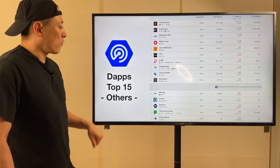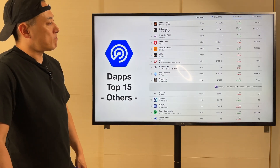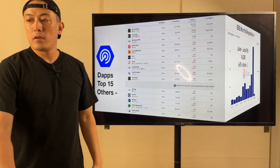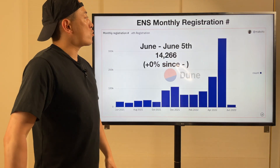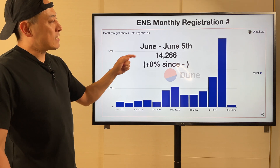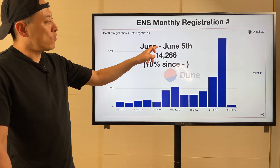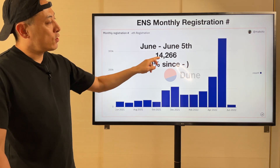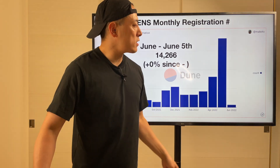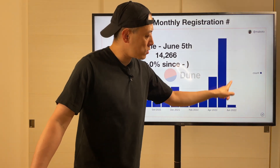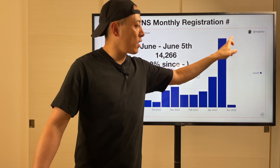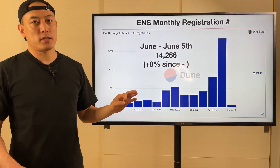DApps top 15 — WAX. No big change. Atomic Assets still number one. Additional item: ENS monthly registration numbers. June stats — as of June 5th, 14K registrations at 266. Since May, that's pretty big growth. Whether they're going to be hitting higher than this is now the biggest topic for us.